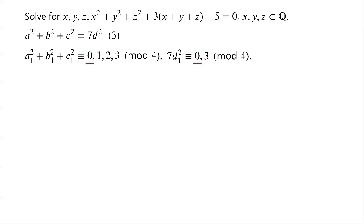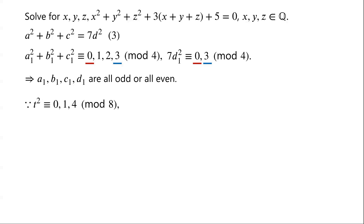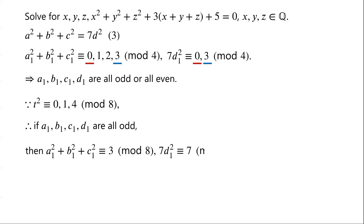Or a1² + b1² + c1² is congruent to 3 modulo 4 and 7d² is congruent to 3 modulo 4. That is to say, either a1, b1, c1, and d1 are all odd, or a1, b1, c1, and d1 are all even. Because any perfect square t² is congruent to 0, 1, or 4 modulo 8, if a1, b1, c1, and d1 are all odd, then a1² + b1² + c1² is congruent to 3 modulo 8. But 7d² is congruent to 7 modulo 8. This implies that (a1, b1, c1, d1) is not a non-zero integer solution of equation 3 — a contradiction.